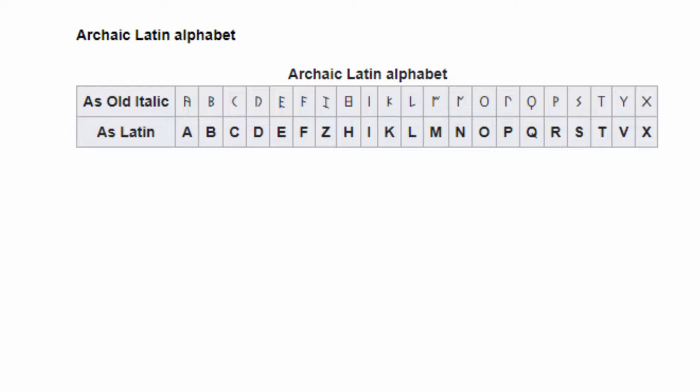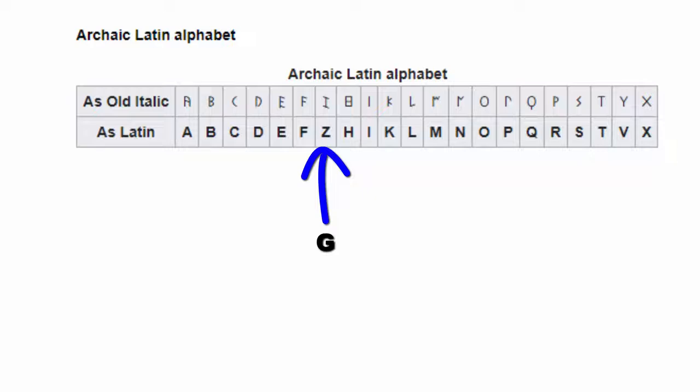Here we see the archaic Latin alphabet and its modern equivalent. Notice some of the modern letters are missing, and some are in different places. During the 3rd century BC, Z was dropped and a new letter G was placed in its position. Until this time, the alphabet could have been written from right to left. The Etruscan and early Greek were also written from right to left, but it changed after the 1st century.